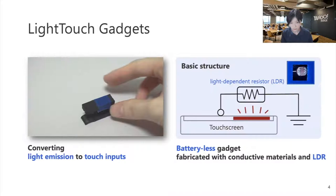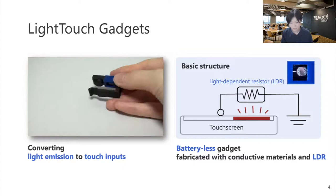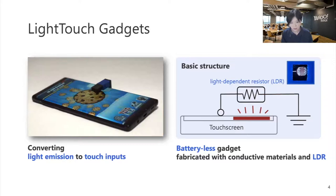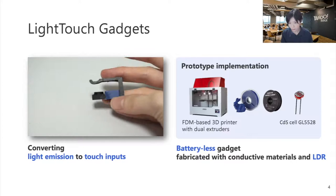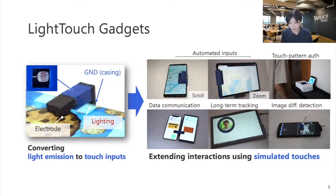To address this, we propose Light Touch Gadget — a passive interface embedded with light-dependent resistors in 3D printed components. It simulates finger touches by controlling screen brightness. This technique not only controls touch inputs, but also opens up new possibilities for interaction with touch screens.